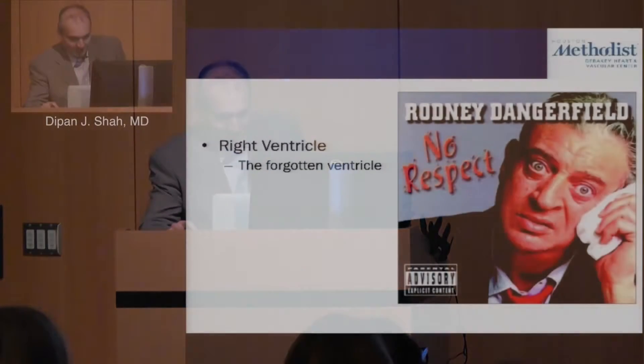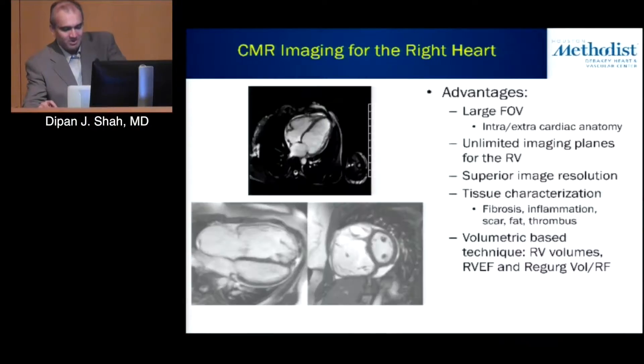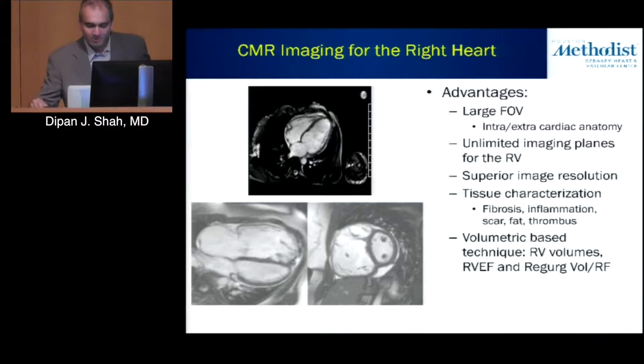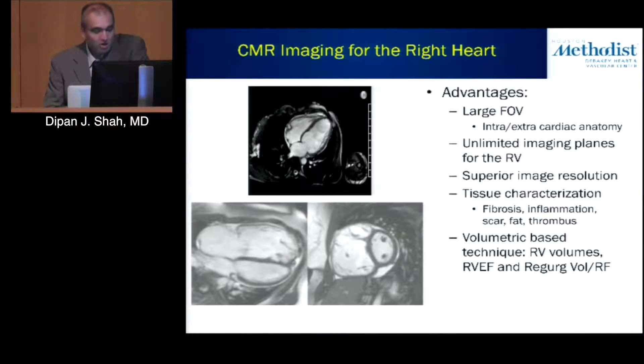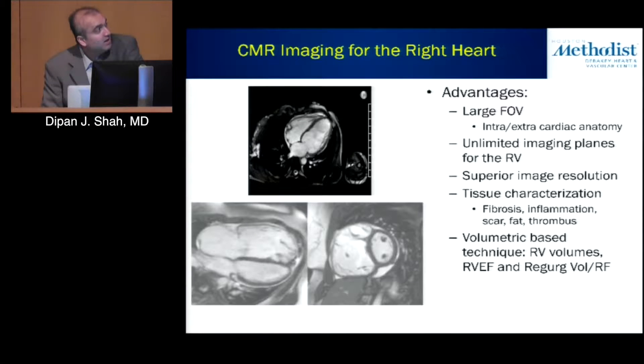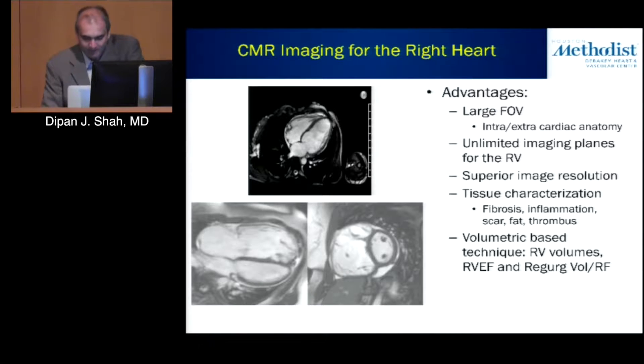What we're going to talk about in the next 15 minutes or so is the forgotten ventricle, the RV, and the tricuspid and right-sided valves. One reason they're overlooked is because they're harder to image. What I'm going to try to convince you is that CMR may offer advantages in this arena for evaluation of the right heart as well as for assessment of right-sided heart valves.